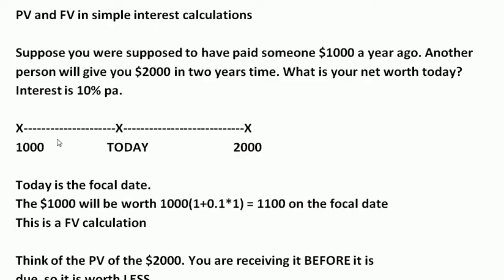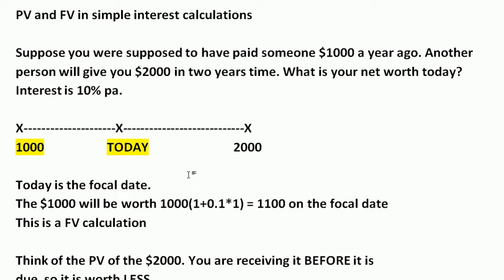From the point of view of today, the thousand dollars was due a year ago, so naturally you'd expect it to have increased in value by today — just like money in the bank increases over time. So this is going to be a future value calculation. Stand at the thousand dollars and think: today, the focal date, is in the future, so I need to use the future value formula, and it's going to be a greater sum because it's had one year to increase in value.